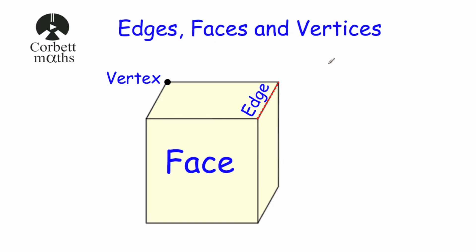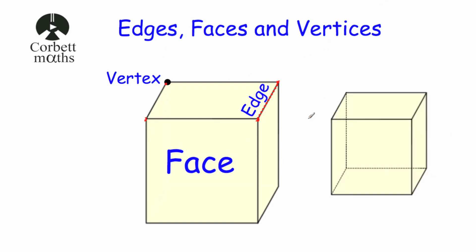Now let's have a look at vertices. Vertices are where the edges meet, and they are the corners of the three-dimensional shape. So if we have a look at this cube, it would have eight corners, or eight vertices. One of them is called a vertex, and the plural is vertices. On the top of this cube we have got four vertices, and four on the bottom. So a cube altogether has got eight vertices.